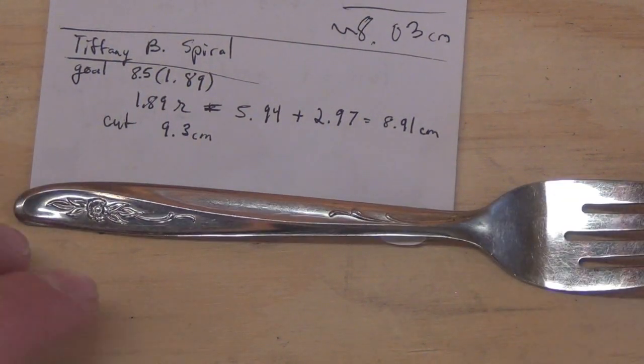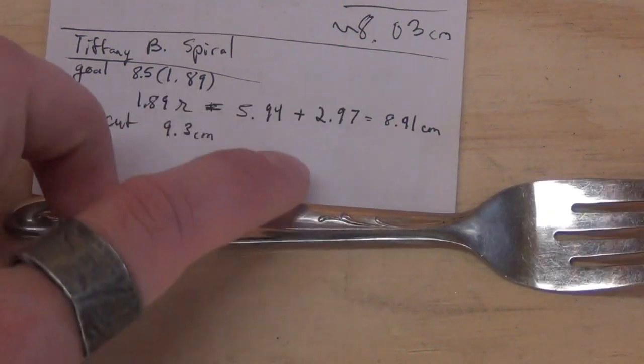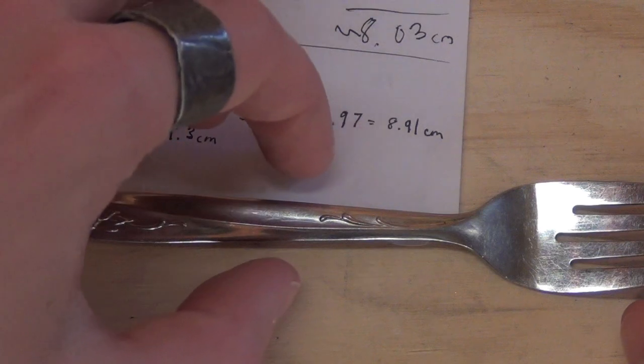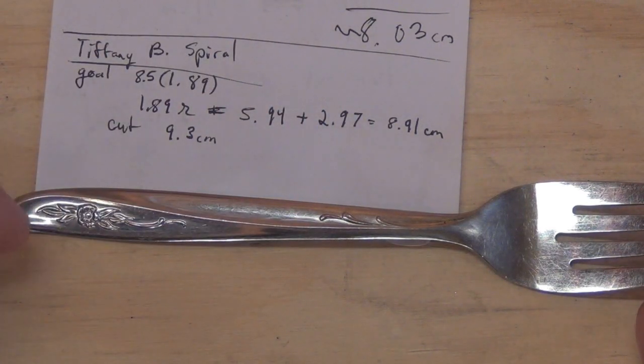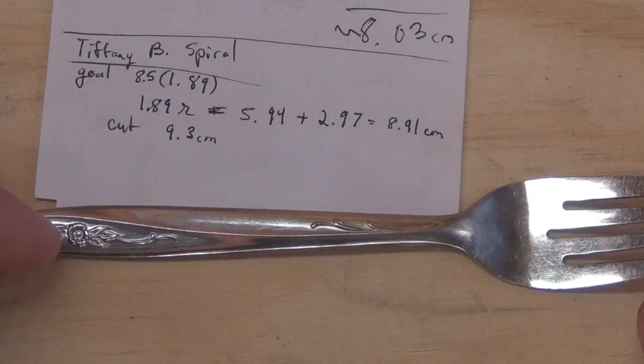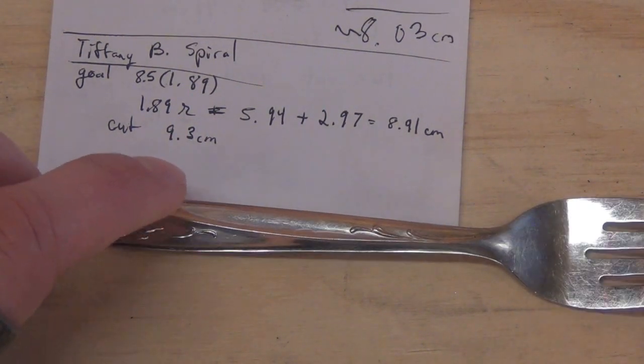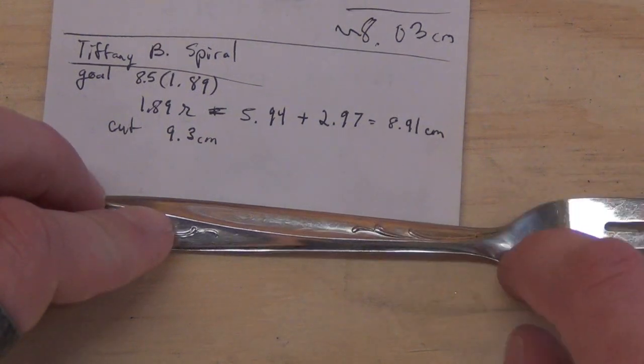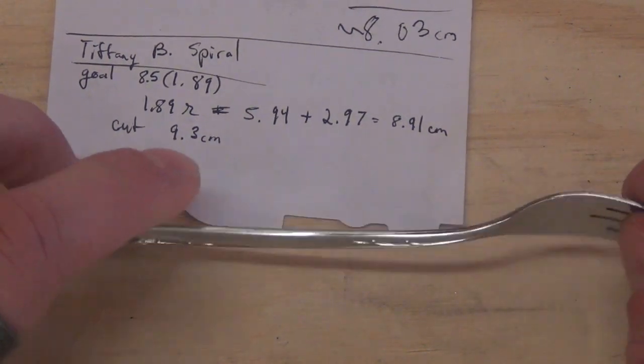I'm not sure, but you probably lose a lot of your length as you start doing the spiral because some is translated into lateral movement. So I don't have a measurement for that, but I'm going to try to estimate. I was going to use maybe 10 centimeters or maybe even 9.5 centimeters, but this fork will only let me do a 9.3.